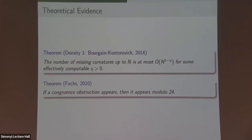Elena Fuchs proved in her thesis that if a congruence obstruction happens, it happens mod 24. In particular, if you look at this picture mod 5, all the residues mod 5 appear. If you look at it mod 49, everything mod 49 appears. So mod 24 is the 'bad modulus' — the only place that'll tell you something non-trivial.